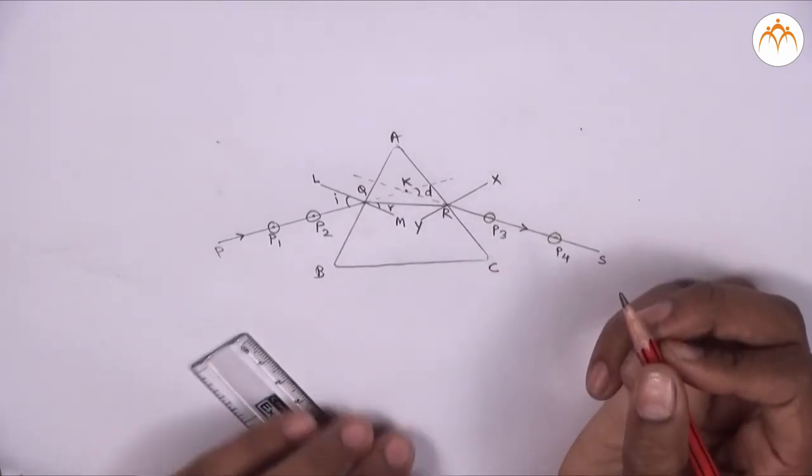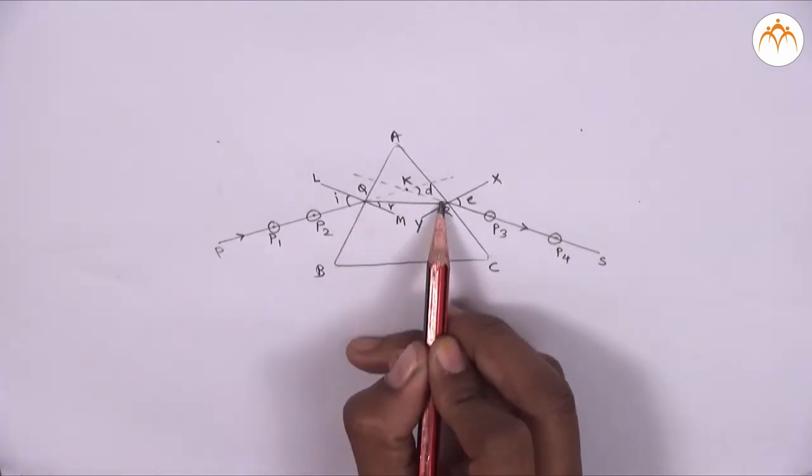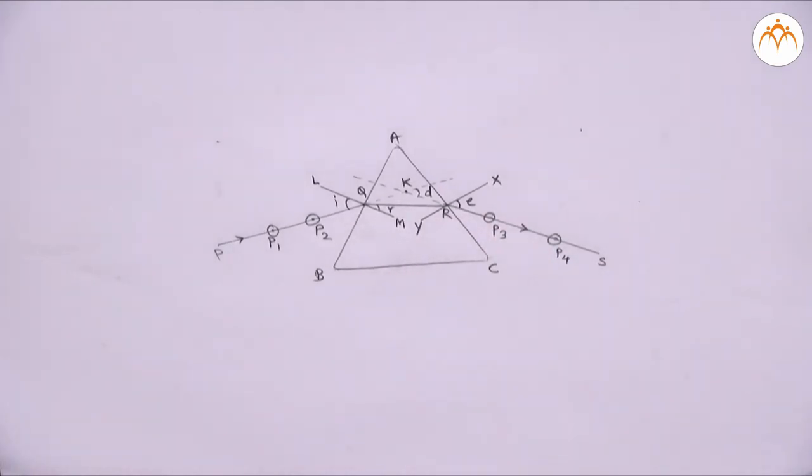Record angle of incidence, angle of refraction and angle of deviation that is I, R and D for 30 degrees. Repeat the procedure for angle of incidence 45 degrees and 60 degrees.